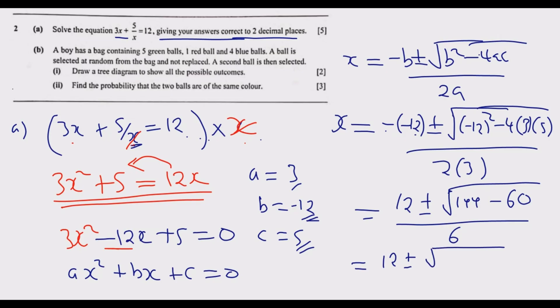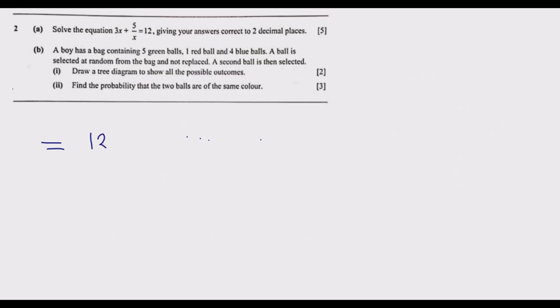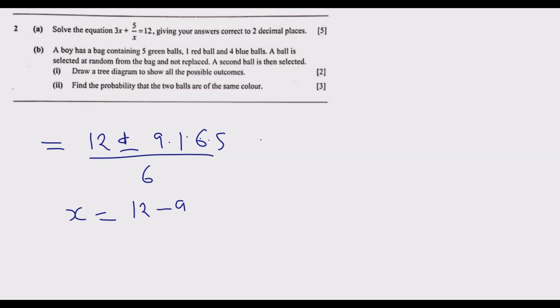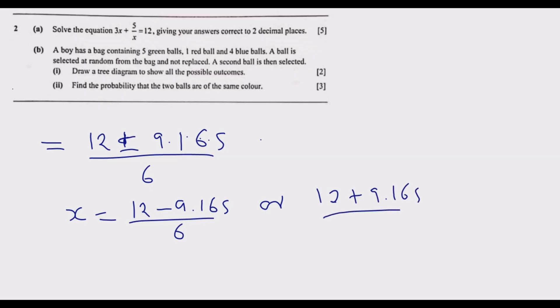So we have 144 minus 60 equals 84 under the square root, giving 12 plus or minus root 84, all over 6. Using a calculator, the square root of 84 is approximately 9.165 to three decimal places. The plus-or-minus means we compute two solutions: 12 minus 9.165 over 6, and 12 plus 9.165 over 6.